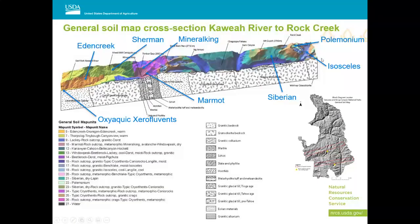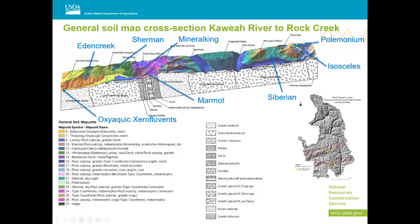The top of Mount Whitney is the same map unit — the Polemonium series. It's a soil that's basically weathering in place. These highest plateaus were unglaciated, so they were nunataks above the valley glaciers, and this soil probably has some aeolian influence. You can see a dark A horizon with vesicular pores and much finer textures in the aeolian material than the coarse sand that makes up the rest of the soil. To summarize: Polemonium at the top, Isosceles in the cirques, Siberian on the glaciated plateaus and valleys, the metamorphic soils Mineral King and Marmot, Sherman in the mid-mountain forested areas, Eden Creek on steep slopes, and the fluvents in the river bottom.